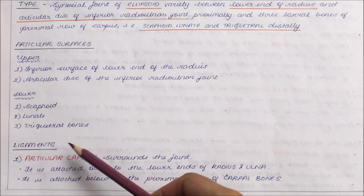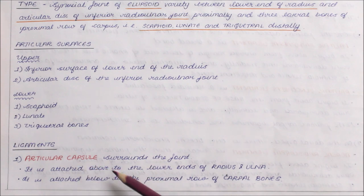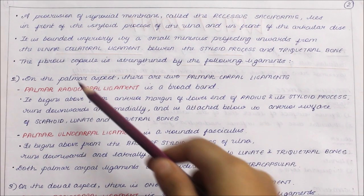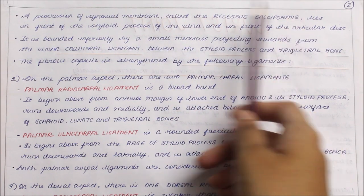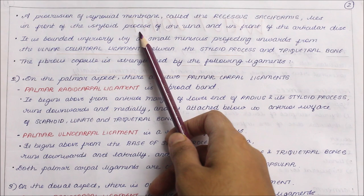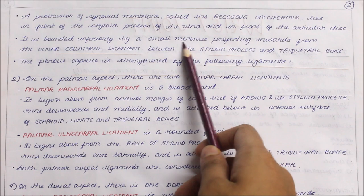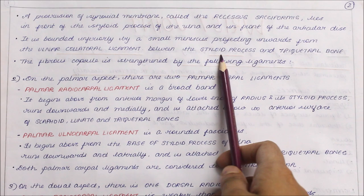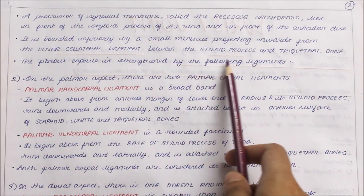Concising the important points under ligaments: the articular capsule surrounds the joint, attached above to the lower ends of the radius and ulna, and below to the proximal row of carpal bones. The recessus sacciformis, a protrusion of the synovial membrane, lies in front of the styloid process of the ulna and the articular disc, bounded inferiorly by a small meniscus projecting inwards from the ulnar collateral ligament between the styloid process and the triquetral bone.